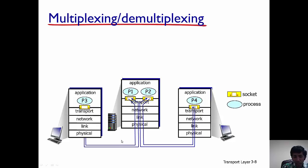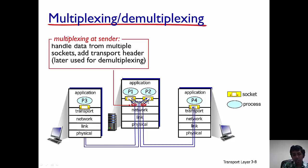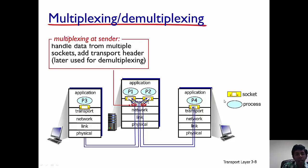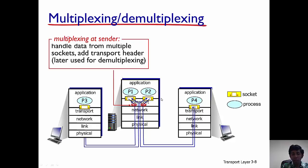First, let's consider multiplexing. Assume the server is sending data to the clients. There is a connection between the server and each client — one between the server and client one, and another between P2 and process P4. The server must handle data from multiple sockets and add transport layer header information.